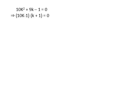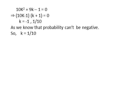Factorizing 10k² + 9k − 1 by splitting the middle term, we get (10k − 1)(k + 1) = 0. So we get two values: k = −1 and k = 1/10. As probability cannot be negative, k = −1 is rejected and the value of k is 1/10.